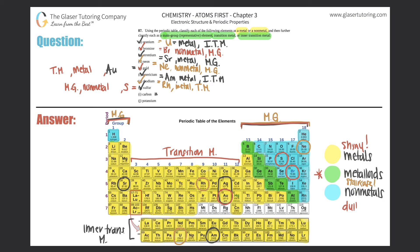Element i: Carbon. Carbon is super important, especially for anything living — you'll love carbon in organic chemistry. Carbon is element number 6, it's a non-metal because it's to the right of the staircase, and it's also a main group element.